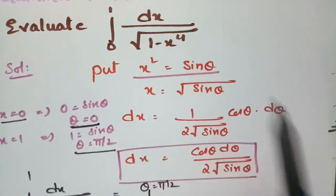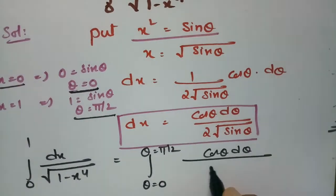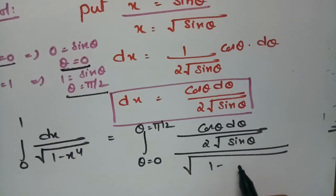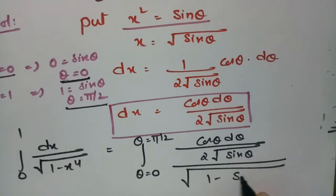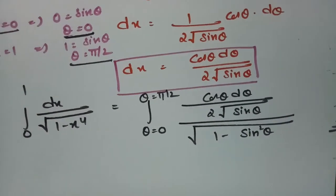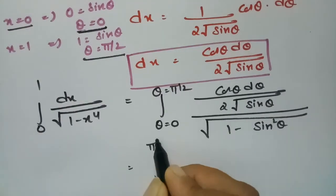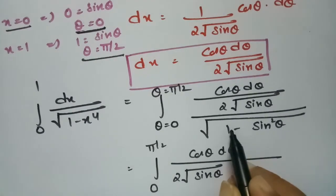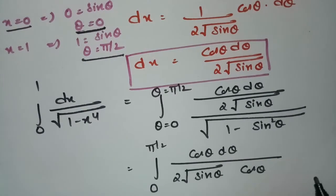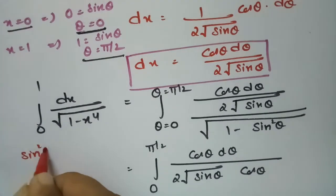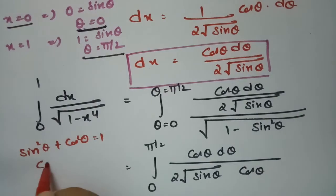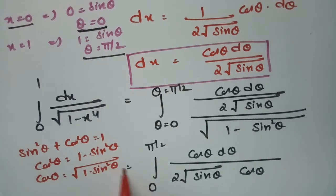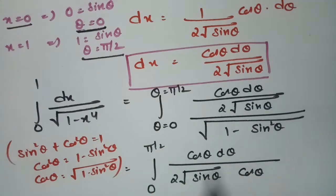The value of dx is cos θ dθ / (2√sin θ), divided by √(1 − x⁴). Since x² = sin θ, x⁴ = sin²θ. So the denominator √(1 − sin²θ) = cos θ, by the identity sin²θ + cos²θ = 1, giving cos²θ = 1 − sin²θ, hence cos θ = √(1 − sin²θ).